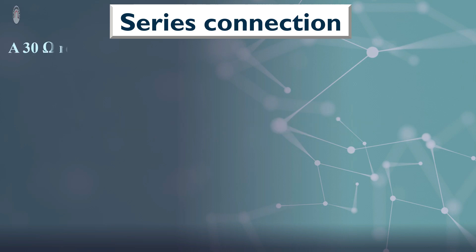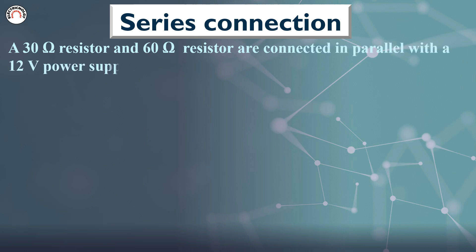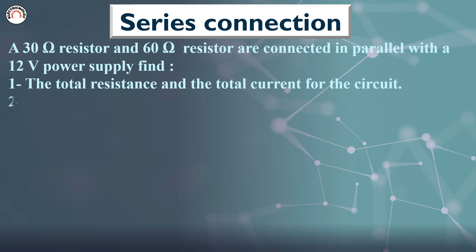A 30 Ω resistor and 60 Ω resistor are connected in parallel with a 12 V power supply. Find: 1. The total resistance and the total current for the circuit. 2. The voltage and current in each resistor.